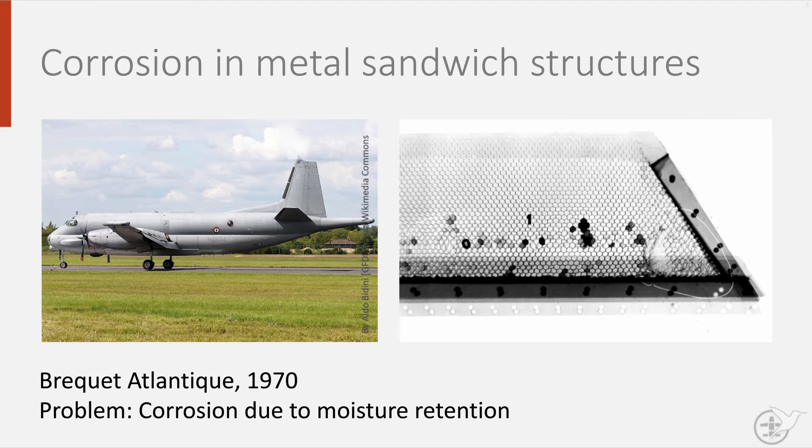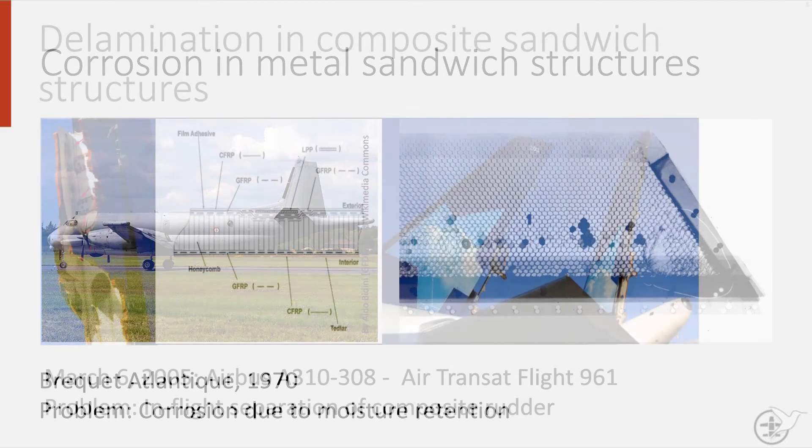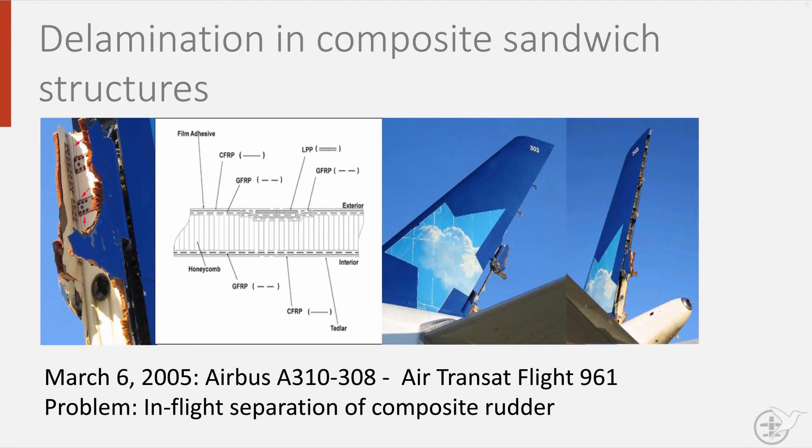This problem of water retention is not just limited to metallic sandwich structures. In 2005, an Air Transat Airbus A310 had to perform an emergency landing as it lost a large part of its composite rudder in flight. The subsequent air safety investigation discovered that the moisture had been absorbed and trapped inside the sandwich panel, causing rapid delamination of the face sheets from the core. This delamination was the result of the moisture freezing and therefore expanding.